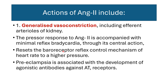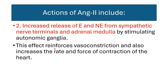Actions of angiotensin 2 include generalized vasoconstriction, including the efferent arterioles of the kidney. The pressure response to angiotensin 2 is accompanied by minimal reflex bradycardia, as it resets the baroreceptor reflex control mechanism of heart rate to a higher pressure. Pre-eclampsia is associated with development of agonistic antibodies against angiotensin receptors. Angiotensin also increases release of epinephrine and norepinephrine from sympathetic nerve terminals and adrenal medulla by stimulating autonomic ganglia, reinforcing vasoconstriction and increasing the rate and force of cardiac conduction.